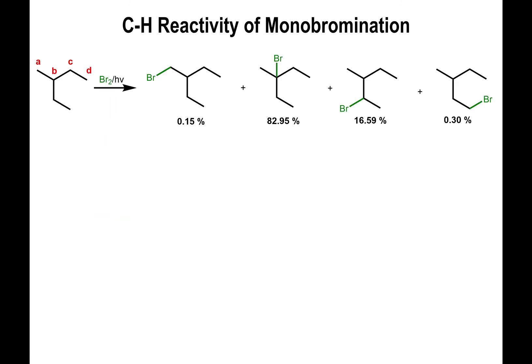Now let's look at the same molecule but using bromine instead of chlorine. Br2 is the reactant, exposed to light for a short period to produce the Br radical, and we end up with the same four products based on the four unique carbons. The yields are notably different — some are extremely low yields, less than a percent, compared to chlorination where we had at least 13-17% for each type.